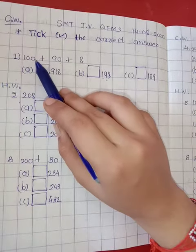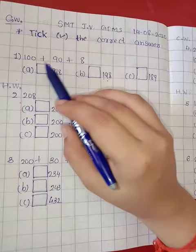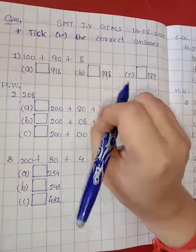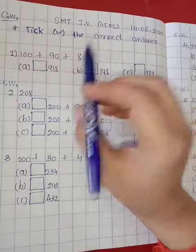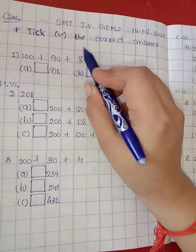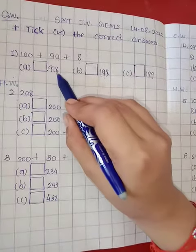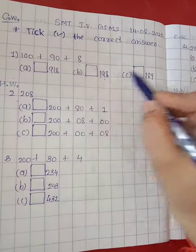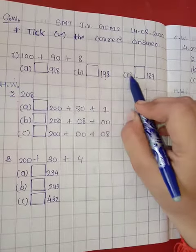First, here is 100 plus 90 plus 8. Now you have to check which one is correct. The expanded form is given, you have to check the number. Start from the ones place. 8 is on the ones place. 8 ones is 8. Find out where is the 8. Here is 8, here is 8, and here is 9. So here is 9, 9 ones is 9. So this option is not correct.